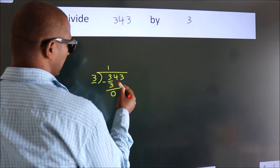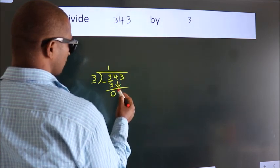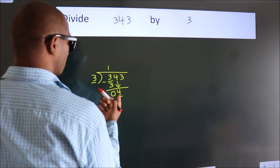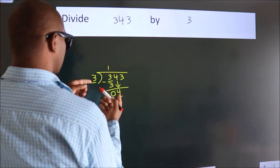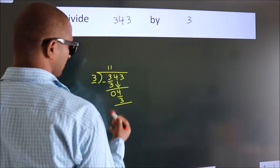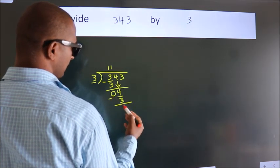After this, bring down the beside number. So 4 down. So 4. A number close to 4 in the 3 table is 3 ones are 3. Now we subtract. We get 1.